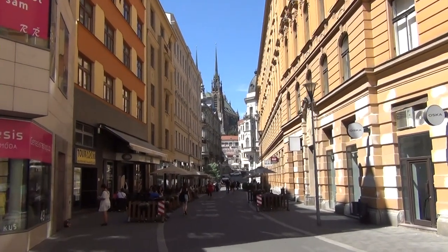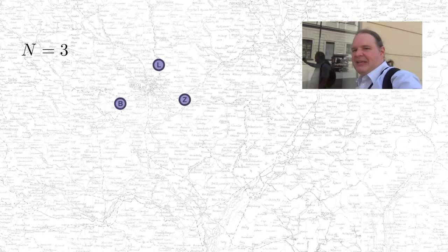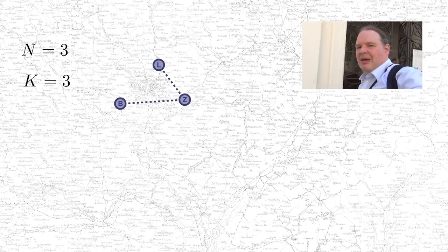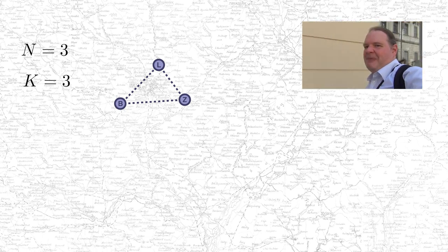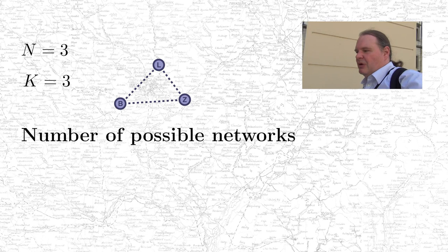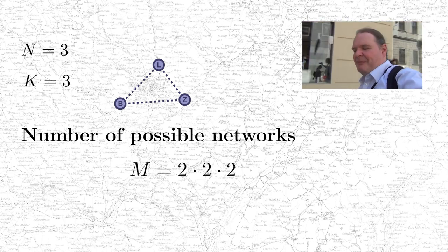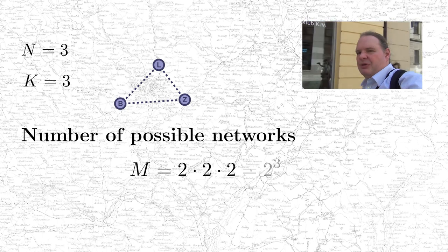To compute the number of networks that can be constructed between a given set of cities, we can use a strategy that I call Simplify-Generalize-Check. We start by finding a very simple example that we can definitely solve. Then in the second step, we generalize what we learned from this example to the general case. And finally, we check that we did the generalization right. Let's start simple, with an example with only three cities. Between three cities, we can build up to three links, and for each of these links we have the option to build it or to not build it. One of the basic rules of combinatorics is that if you have independent choices, the number of options multiply. So if you have three links and two options for each, the total number of networks is two times two times two — two to the three, which is eight.